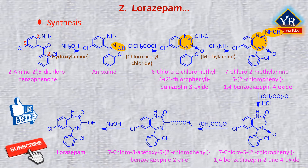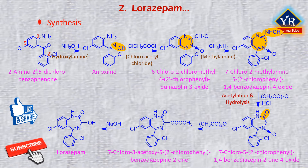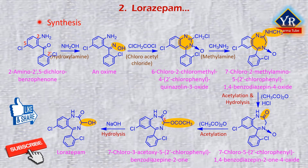The resulting benzodiazepine-4-oxide undergoes acetylation by acetic anhydride at the secondary nitrogen atom and is further hydrolyzed by hydrochloric acid into 7-chloro-5-(2-chlorophenyl)-1,4-benzodiazepine-2-one-4-oxide. Reaction with acetic anhydride leads to a Polonovski-type rearrangement giving the 3-acetoxylated benzodiazepine, the hydrolysis of which forms the desired product, lorazepam.